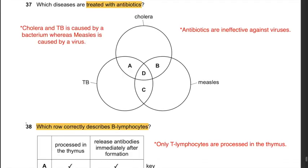Question 37: Which diseases are treated with antibiotics? Antibiotics are ineffective against viruses; they only work against bacteria. Since measles is caused by a virus, it should not be treated with antibiotics. Cholera is caused by Vibrio cholerae and TB is caused by Mycobacterium tuberculosis or Mycobacterium bovis - both are bacteria. Therefore the answer is A: cholera and TB.